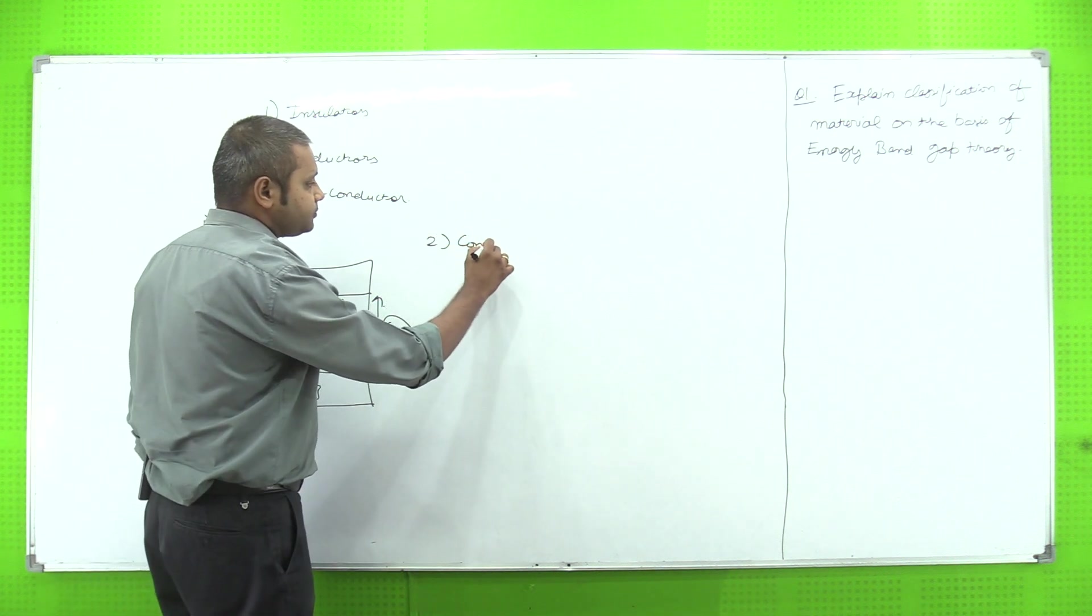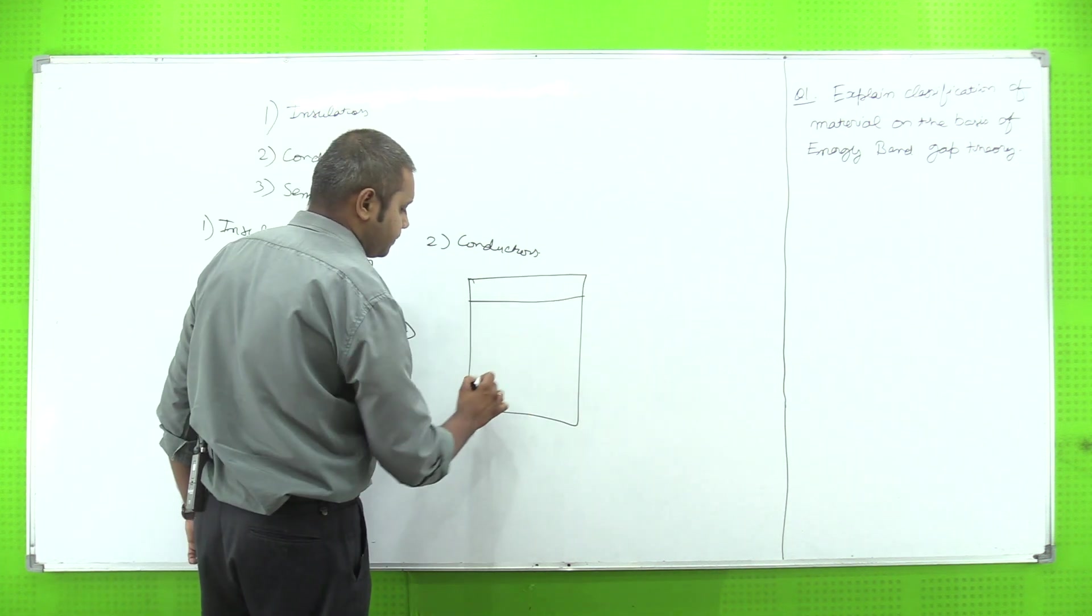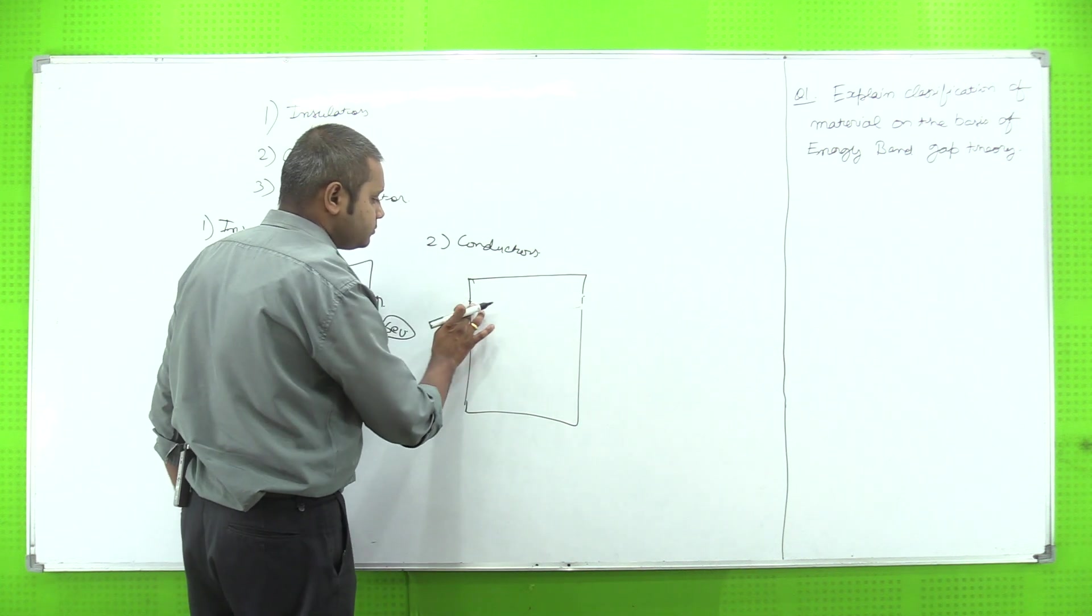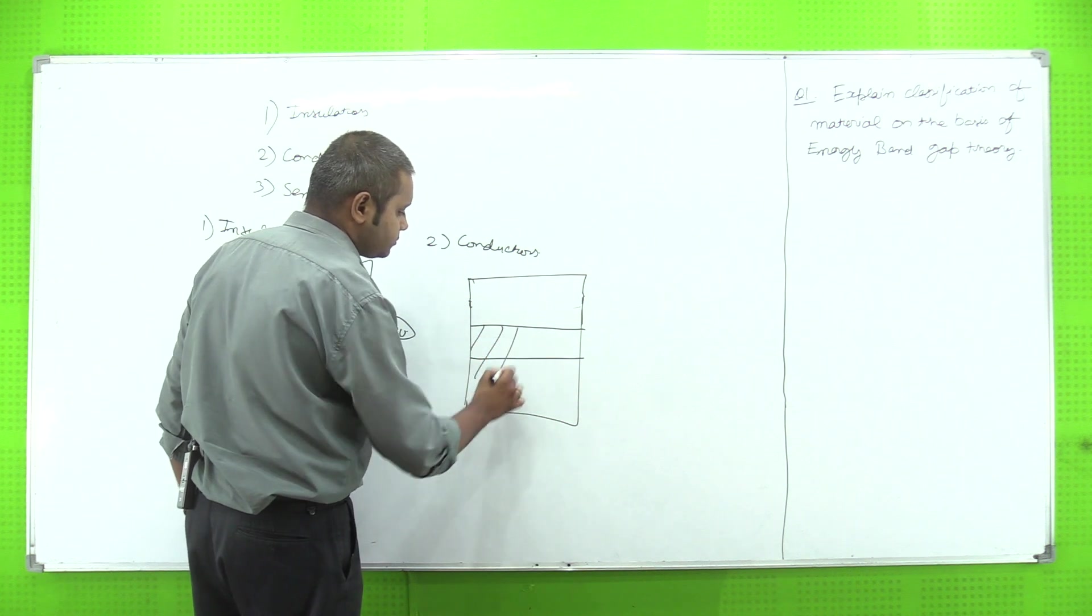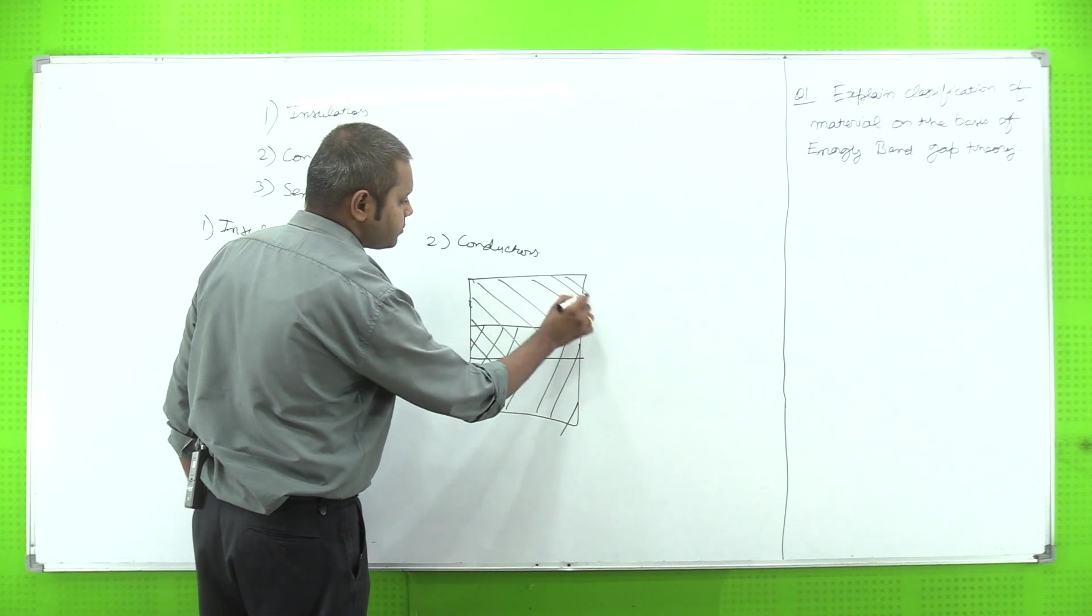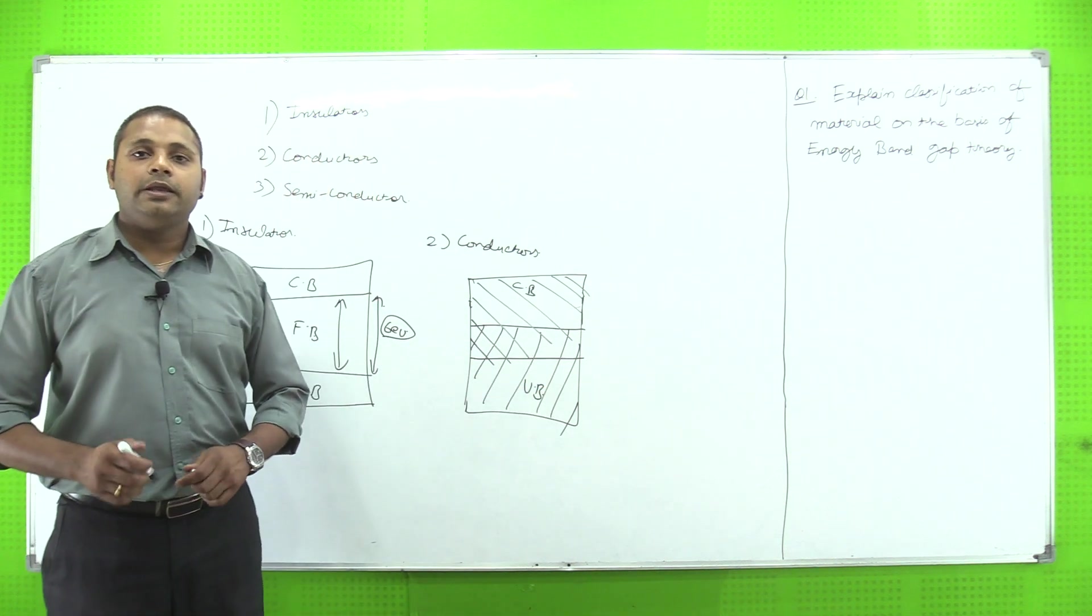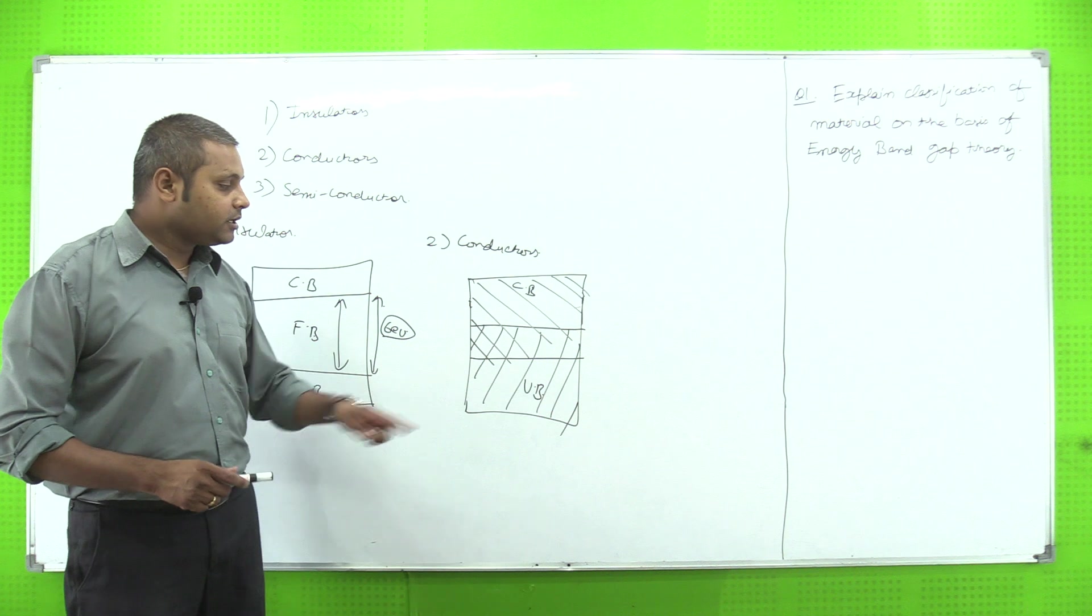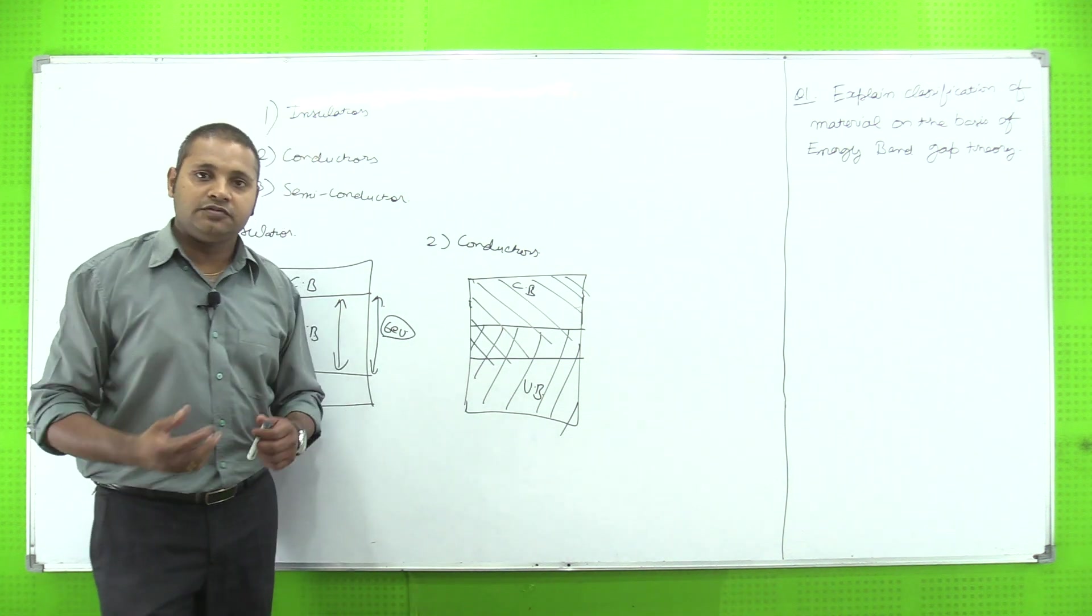Second one is conductors. For conductors, there will be no forbidden band present inside the conductors. Agar main diagram dekhon, toh diagram hai, mujhe clear dikhai deh raha hai - valence band overlap hai conduction band pe. As we all know, ki conductors wo material hote hai jo heat aur electricity ko easily pass karte hai.